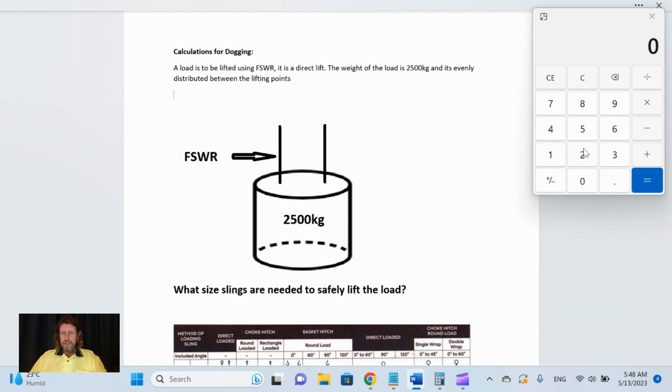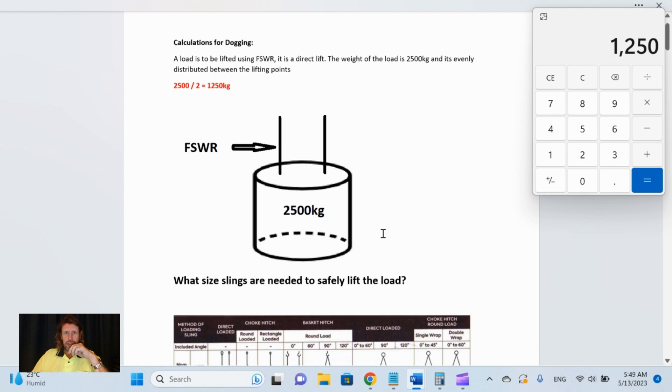What size slings are needed to safely lift the load? First, let's work out the weight that each sling is required. 2500 divided by 2 equals 1250 kilograms.